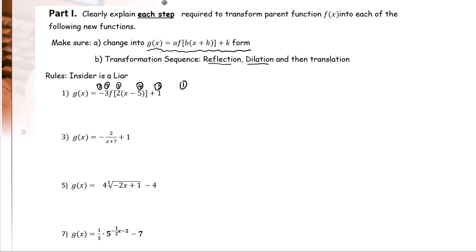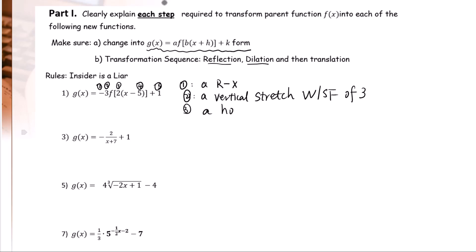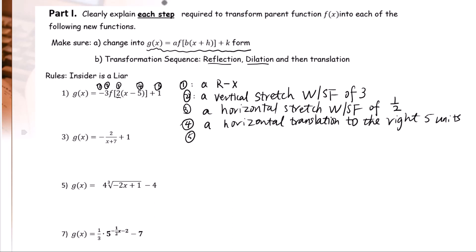The first step is a reflection about the x-axis. Second step: a vertical stretch with a scale factor of 3. The third step: a horizontal stretch with a scale factor of 1 over 2, because insider is a liar. The fourth step: a horizontal translation to the right 5 units. The last step: a vertical translation of 1 unit. The transformation sequence goes from left to right.